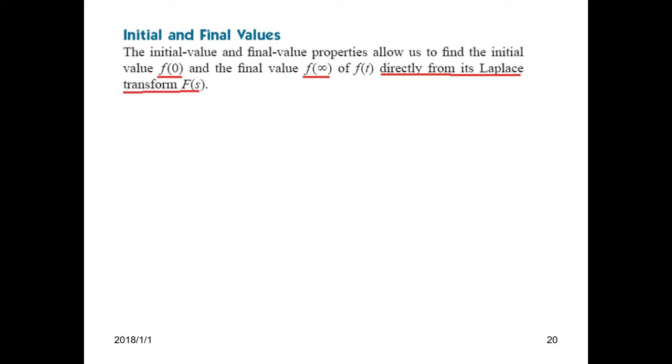The initial value and final value properties allow us to find the initial value f(0) and the final value f(∞) of a function directly from its Laplace transform F(s).